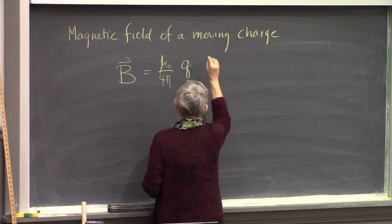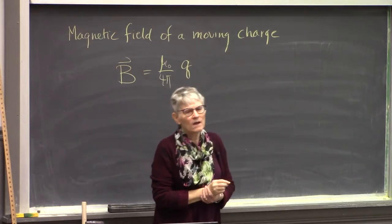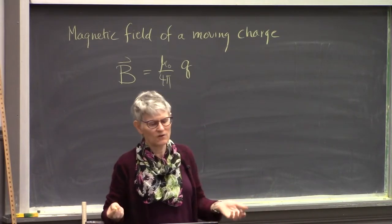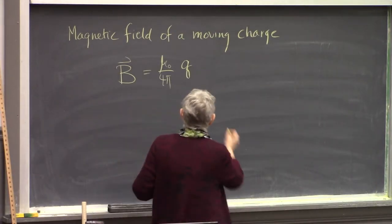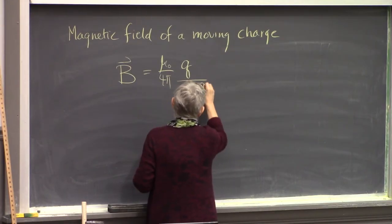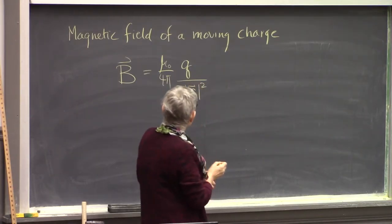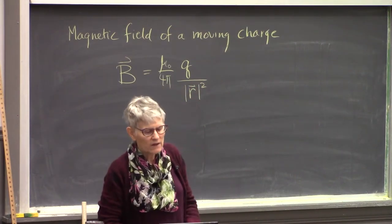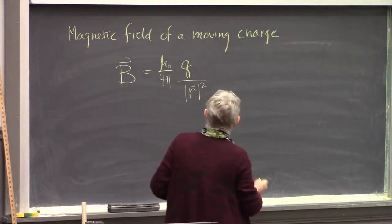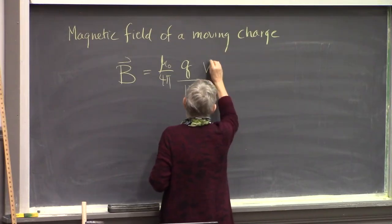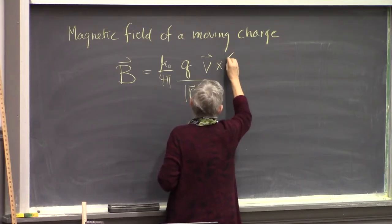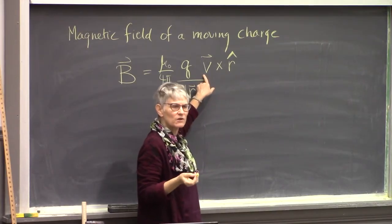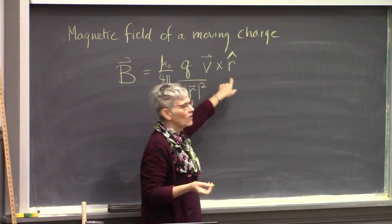The field falls off with distance like 1/r². So we have a constant, a 1/r², and Q in the numerator — that part looks familiar. The only different piece is that there's a V — the velocity of the moving charged particle — crossed with R̂. R is the same as always: if we have a charged particle with velocity V and some observation location, R is the vector from the source to the observation location.